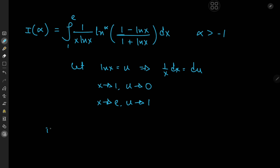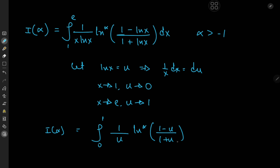So the integral I(α) now transforms into an integral from 0 to 1. Now 1 over x dx turns into du, but we still have 1 over log x, which is 1 over u. We have log to the alpha of (1 minus u) divided by (1 plus u) du.